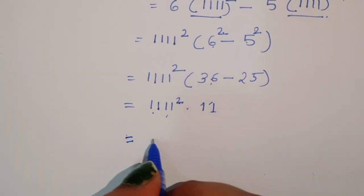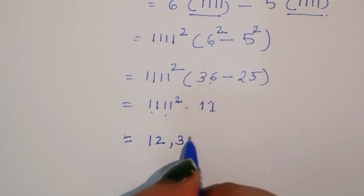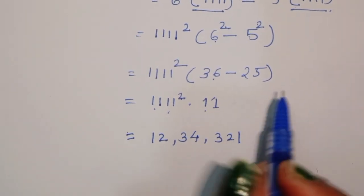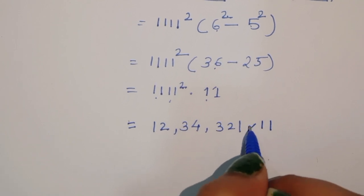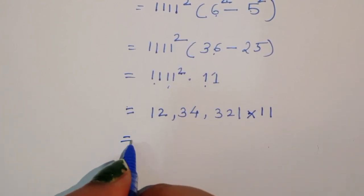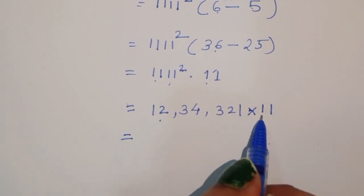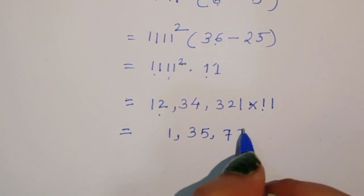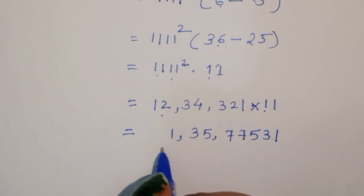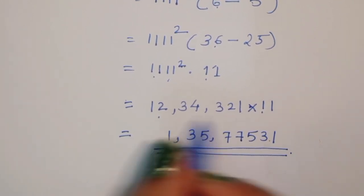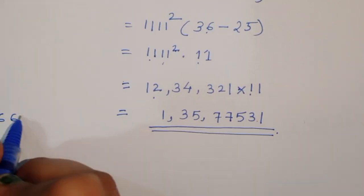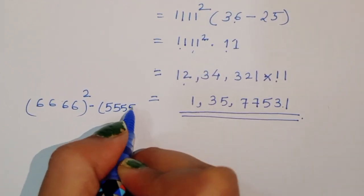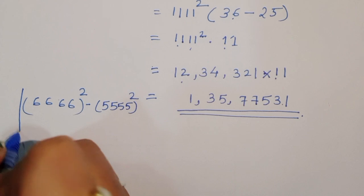When we take the square of 1111, we get 1234321. Now multiplying by 11, we get the answer 13,577,531. So 6666 squared minus 5555 squared equals 13,577,531. This is the solution for the first method.